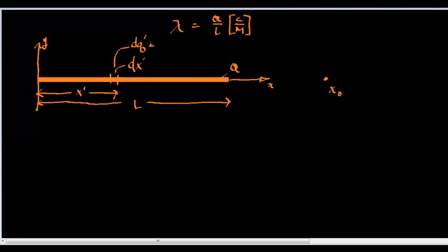dq prime equals lambda dx. It equals that linear mass density times the length dx prime.